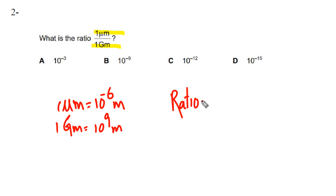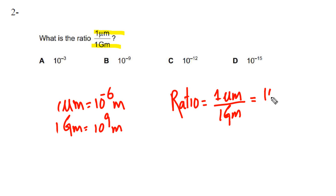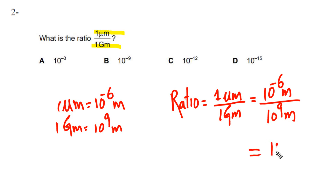If we divide one micrometer by one gigameter, that is 10 to the minus 6 meters divided by 10 to the 9 meters. Simplifying this gives 10 to the minus 15. So our final answer is D.